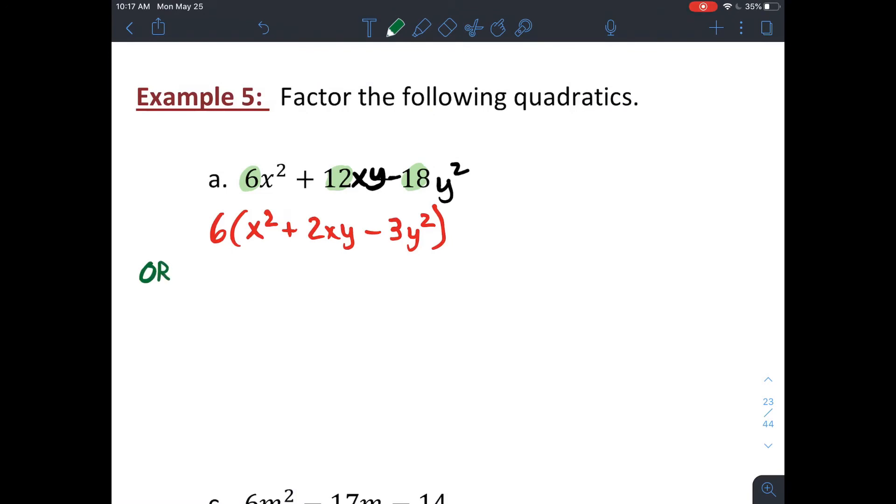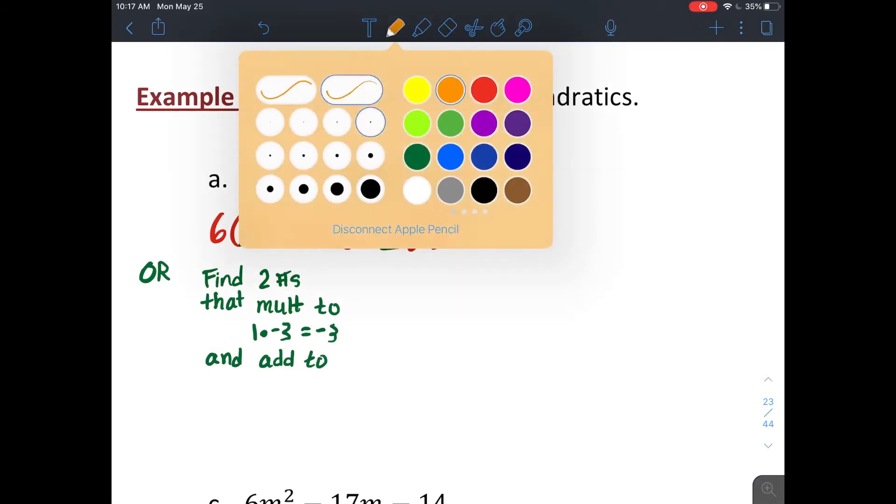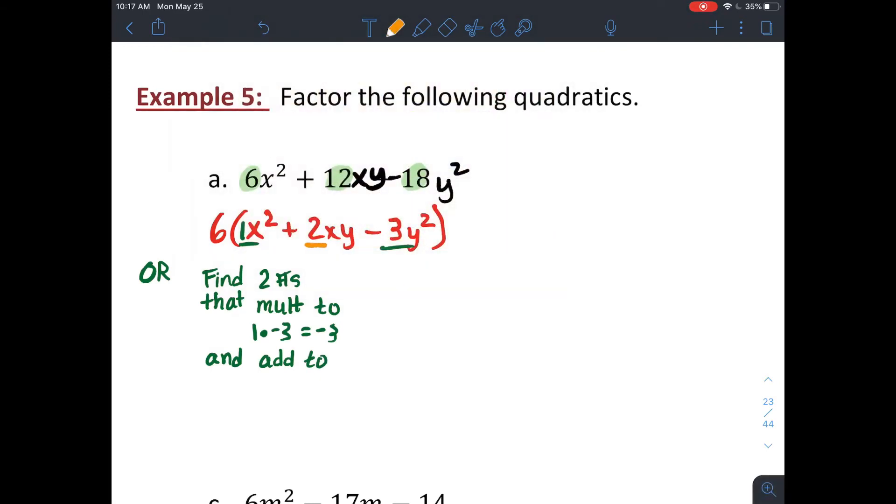Another option that some of you liked in Algebra 2 was factoring by grouping. So you'd still want to factor out that greatest common factor of 6 first. And then I need to find two numbers that multiply to a times c, or to 1 times negative 3. So they need to multiply to negative 3. And they also need to add up to the coefficient on my middle term, which is just 2. So this is gonna be a little bit messy because I have x's and y's, but it'll still work.